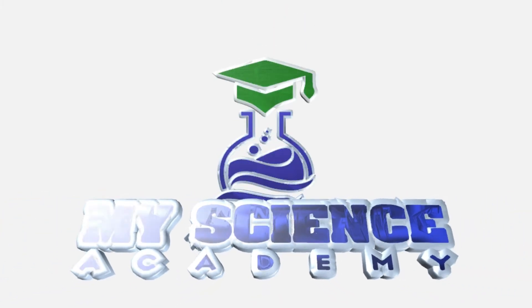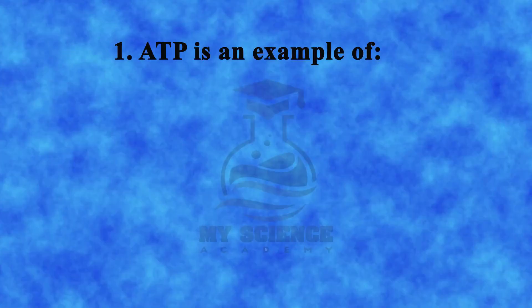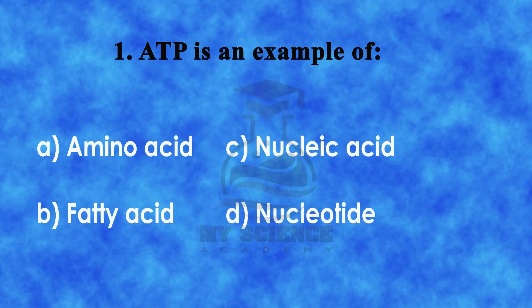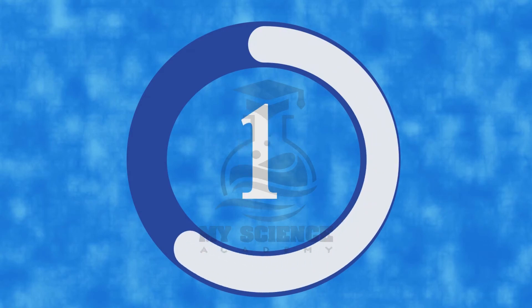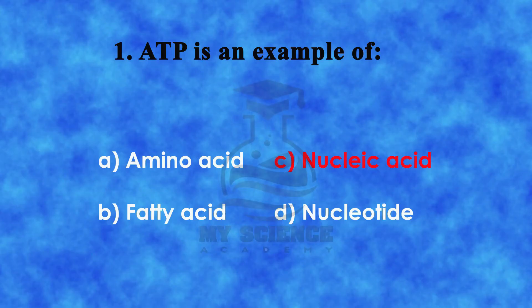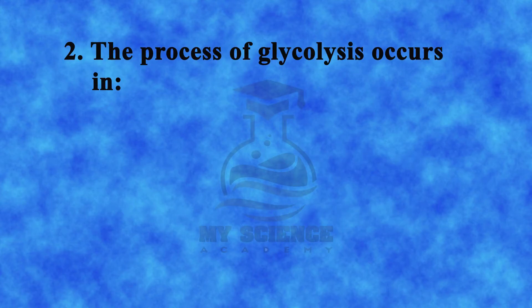Assalamu alaikum dear students, welcome to My Science Academy. Question 1: ATP is an example of: a) amino acid, b) fatty acid, c) nucleic acid, d) nucleotide. The correct answer is c) nucleic acid.